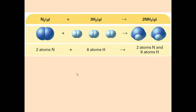Here we have a diagram of the reaction N2(g) + 3H2(g) → 2NH3(g). We're going to find the number of atoms, molecules, moles, and mass. On the left side, we have 2 atoms of nitrogen from N2 — one molecule — and 3×2 = 6 atoms of hydrogen from 3H2. On the right side, NH3 has 1 nitrogen and 3 hydrogens per molecule, multiplied by 2, giving 2 nitrogen atoms and 6 hydrogen atoms. So we have 8 atoms on each side.